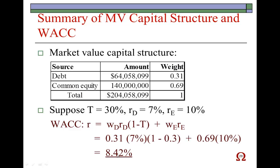So this really wraps it all up. The only one more thing to know is that in the case of common equity, there are three methods. You have a choice as an analyst to use one of the three methods or to average them out based on your best opinion as to what would provide you with the most realistic picture of the firm's cost of common equity. This concludes this presentation.